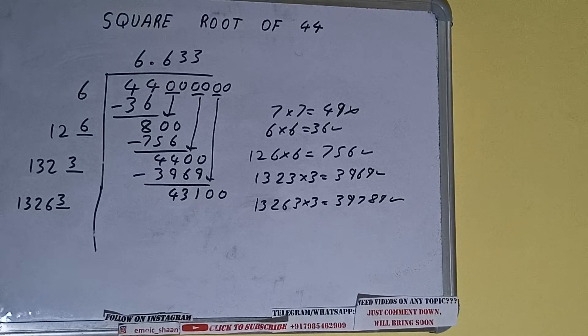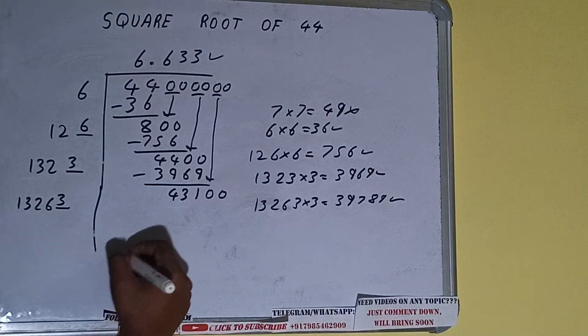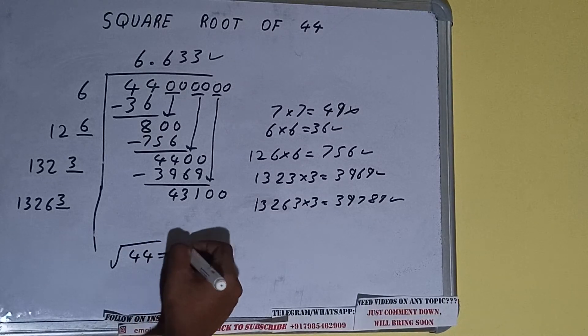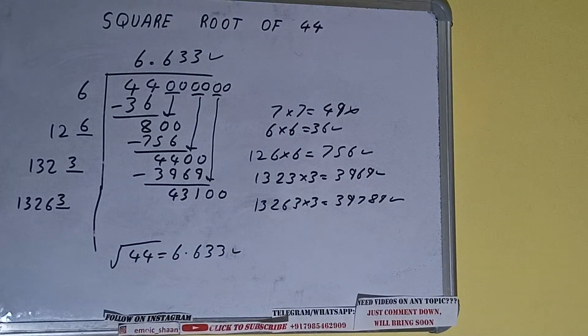So square root of 44 is equal to 6.633, that will be the answer. So this is all about square root of 44. If you found the video helpful, please do the like button, do consider subscribing, and thanks for watching.